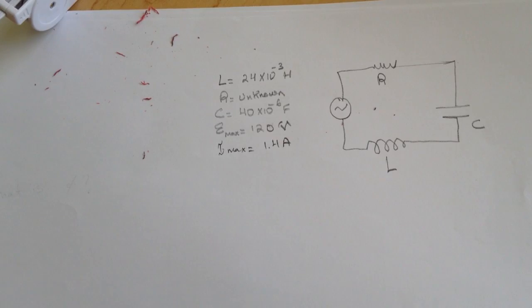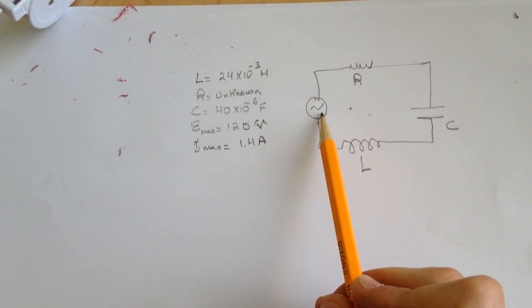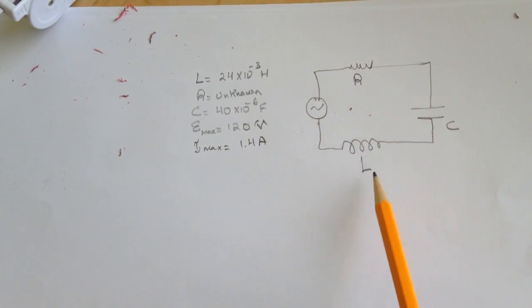This problem is AC circuit 1. Here we have this circuit that has a generator, a resistor, capacitor, and inductor.